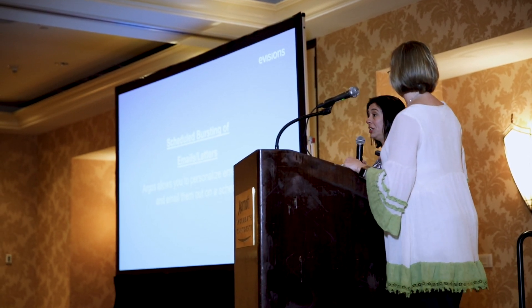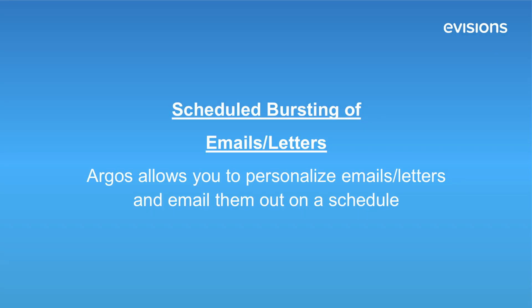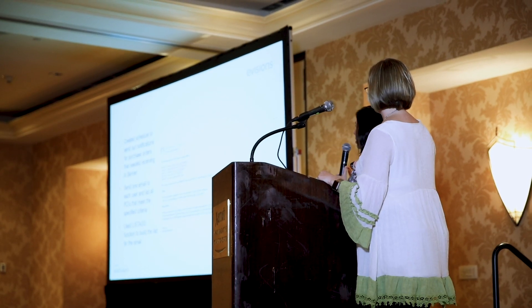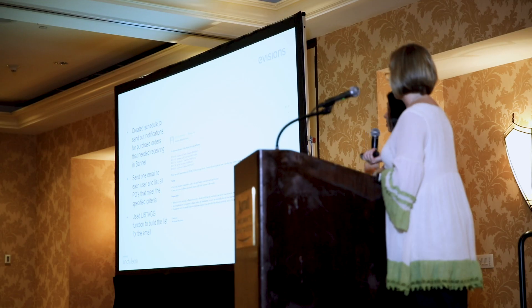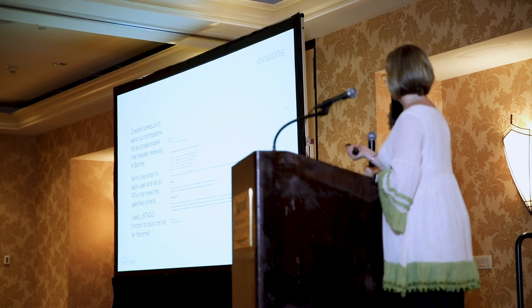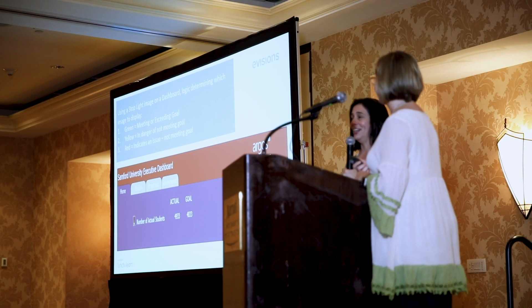We also have a lot of scheduled emails that go out from Argos — we use it exclusively at Sanford. Recently they wanted to get an email notification when receiving in Banner had not been completed. Instead of end users getting five separate emails for five open POs that needed to be received, we used SQL code to pull into one row and send them one email listing all the different ones. You can get creative — really, with Argos you're limited only by your imagination.